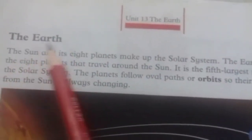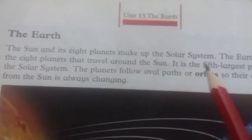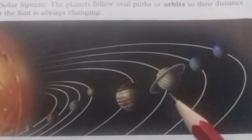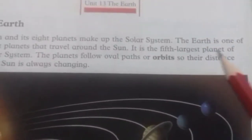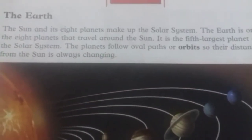Now turn to page number 98. The earth, the Sun and its eight planets make up the solar system. Eight planets jo hain wo kya banaati hain — solar system. You can see in this picture, this is a solar system. The earth is one of the eight planets that travel around the Sun. Inni mein se ek zameen bhi jo hai.